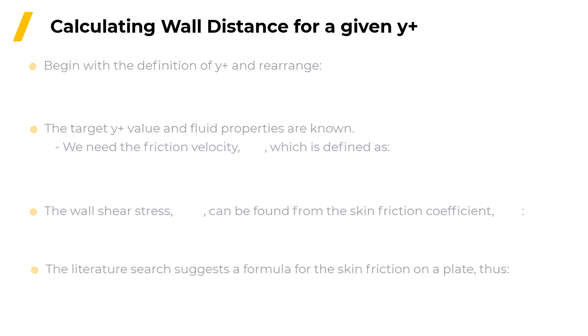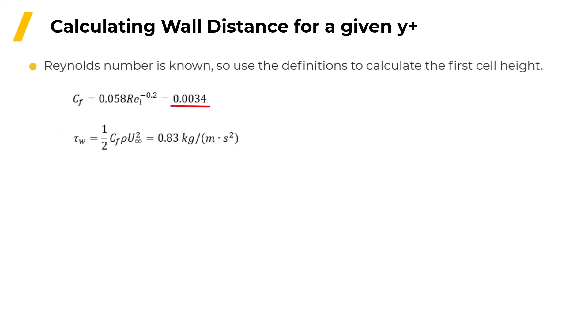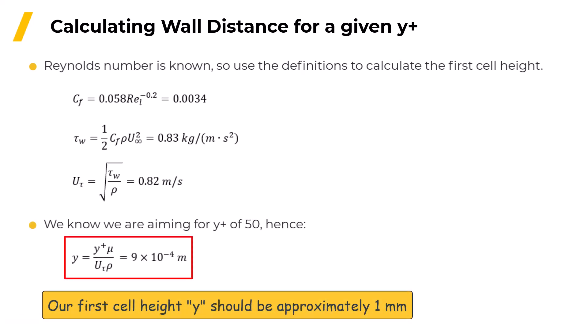The value of the skin friction coefficient is 0.0034, which gives the wall shear stress as 0.83 kilograms divided by meters times seconds squared, or in other words 0.83 pascals, and the friction velocity is 0.82 meters per second. So after all that, we find that Y should be 9 times 10 to the minus fourth meters, or approximately one millimeter.